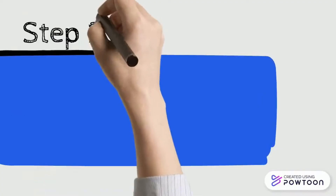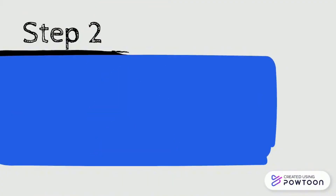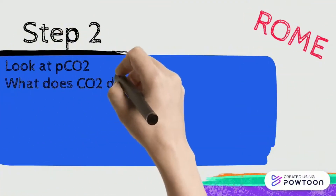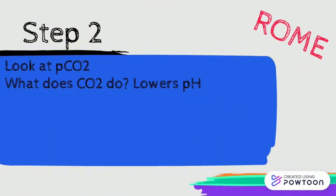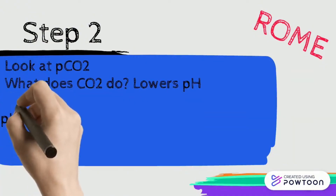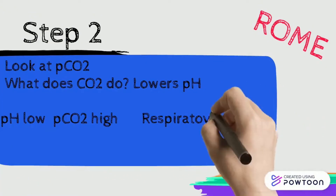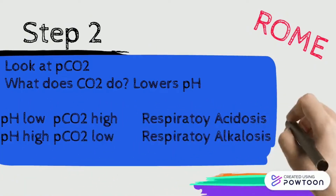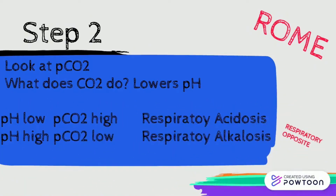Step two is looking at the CO2. What does CO2 do? It's the main mechanism that the lungs regulate blood pH. Remember the acronym ROAM — Respiratory is Opposite. So if the pH is low and the CO2 is high, it's respiratory acidosis. If the pH is high and the CO2 is low, it's respiratory alkalosis. The pH and the CO2 have to be opposite to each other.